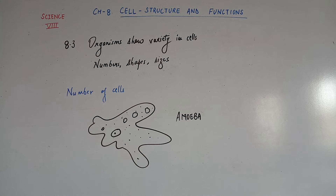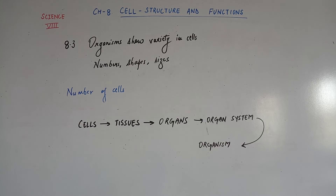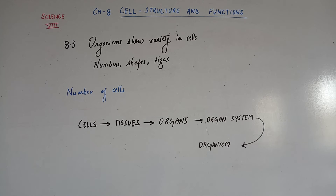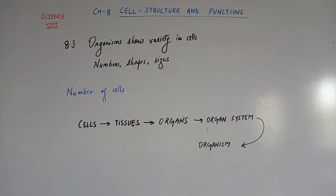The cells form the tissue and the tissues form the organ. So the chain is: first, cells form a group; the cells form tissues; then the tissues form organs; then the organs form the organ system; and then the organ system forms the organism.